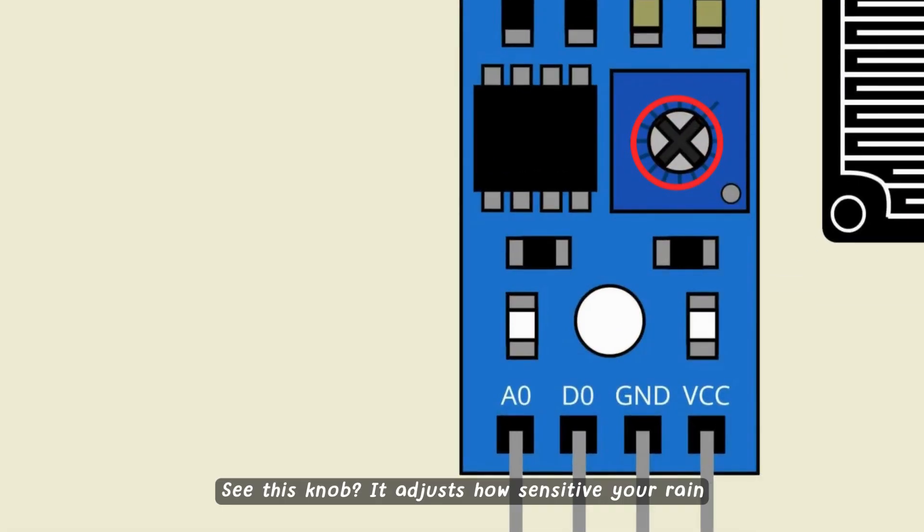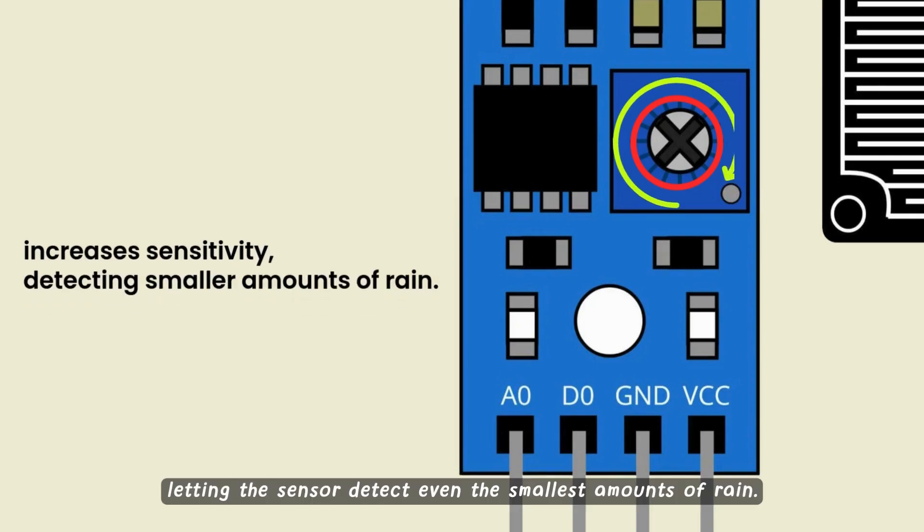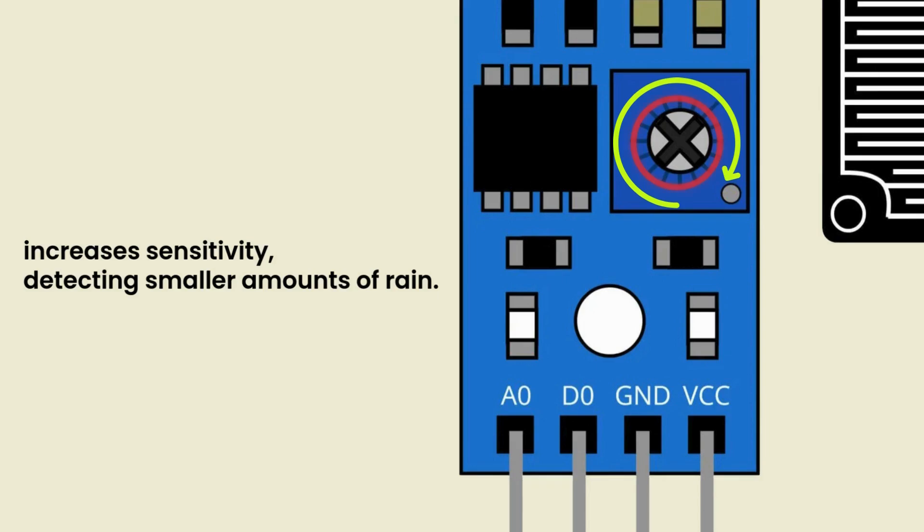See this knob? It adjusts how sensitive your rain sensor is. Turning it clockwise increases sensitivity, letting the sensor detect even the smallest amounts of rain. The more you turn it, the more responsive it becomes to moisture.